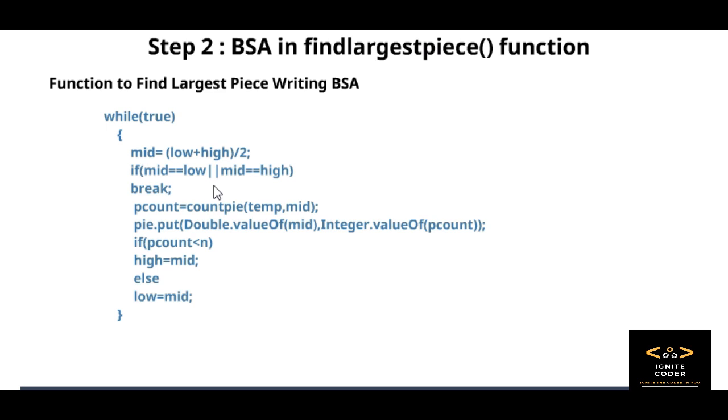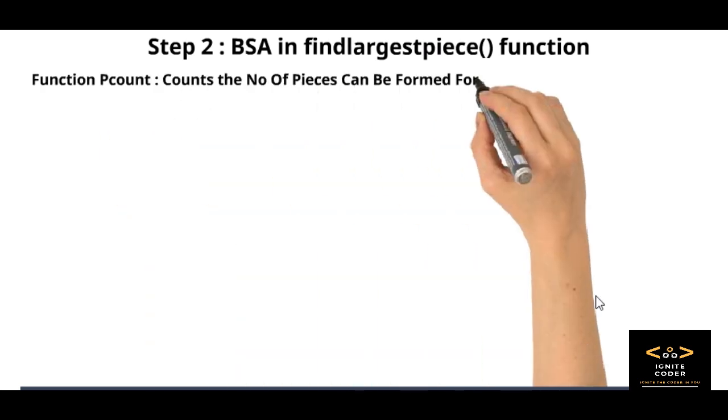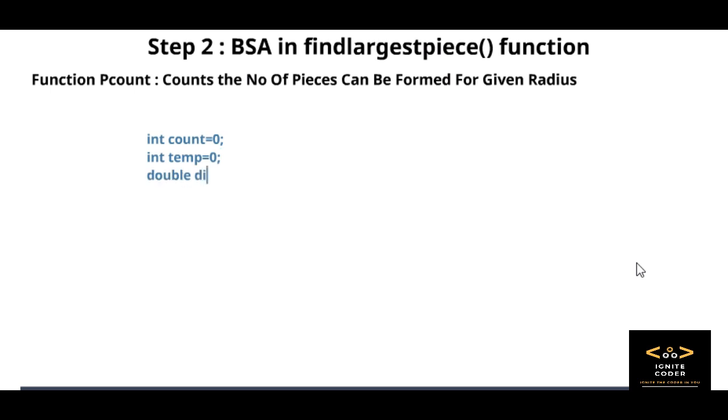Let me explain what count pi function does. We take a loop, we divide each and every element of the radius with the mid value, and the answer we get will be rounded off into int. Like 5 by 2.5 equals 2, 3 by 3 equals 1. That will equal the number of pieces we get from the radius cake.